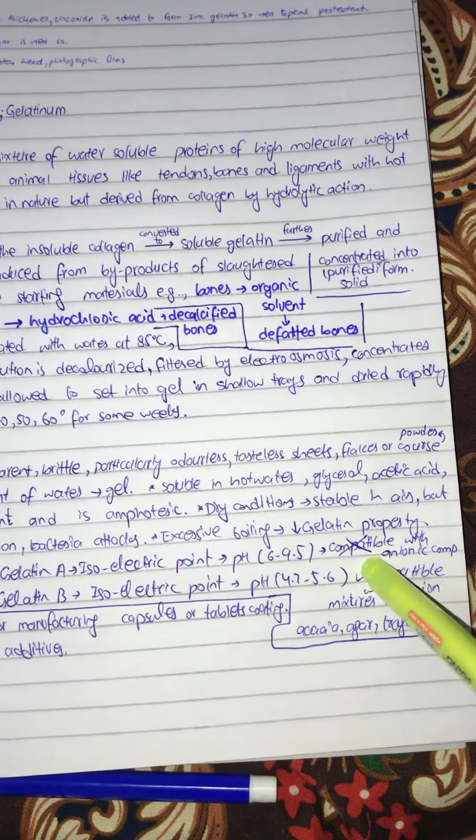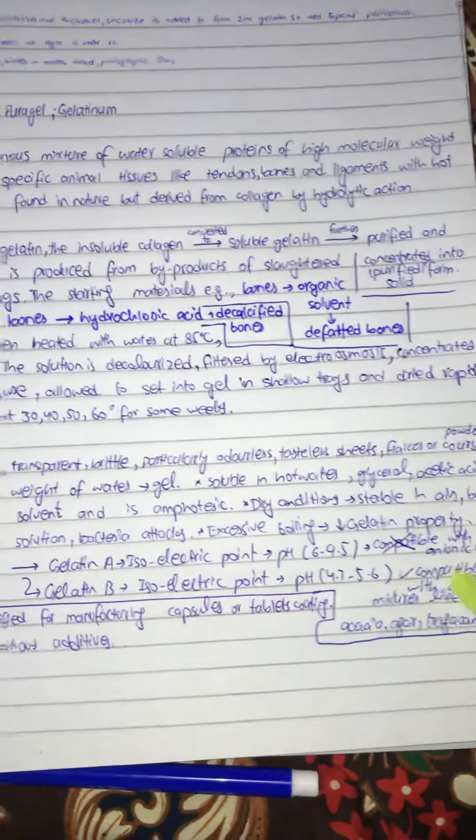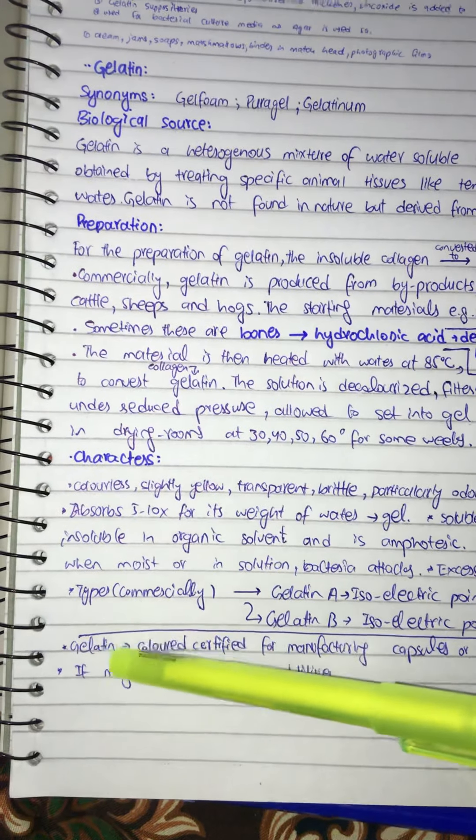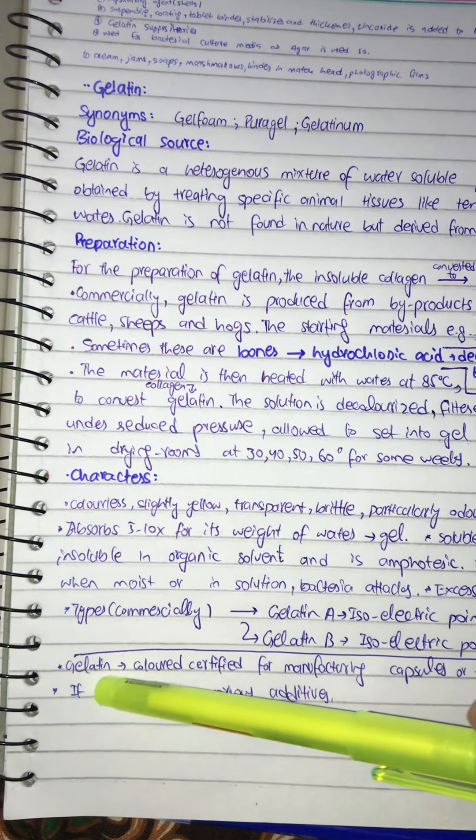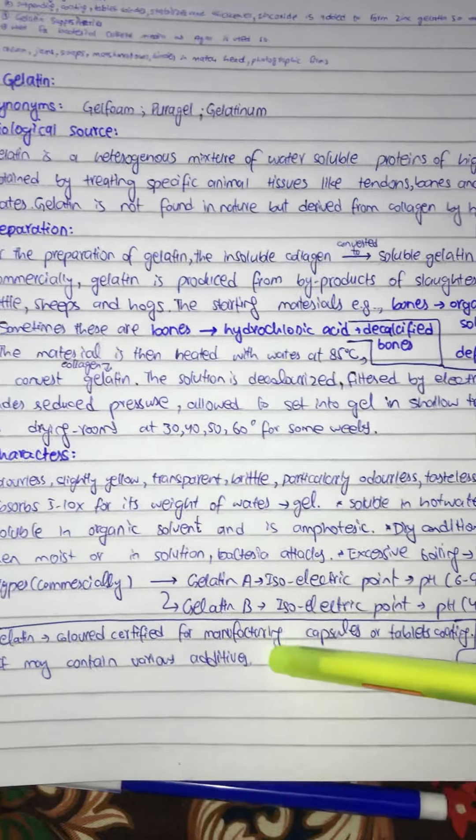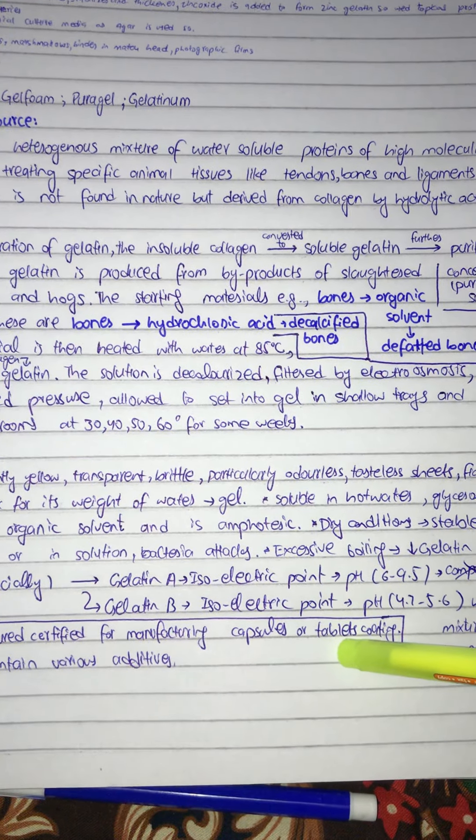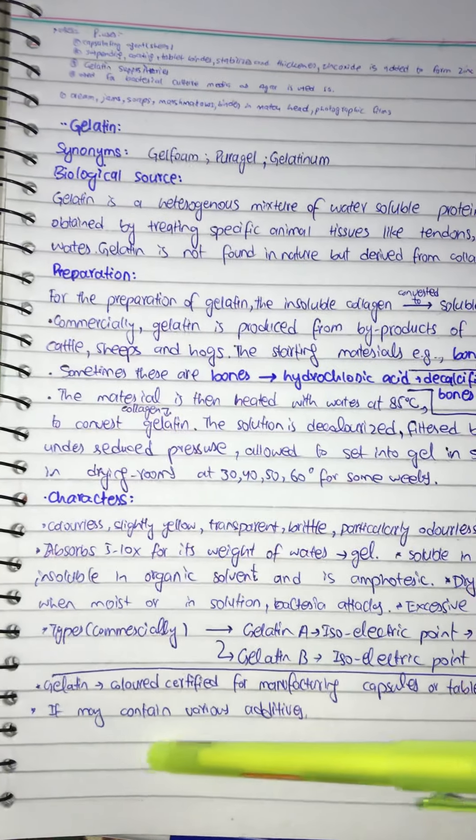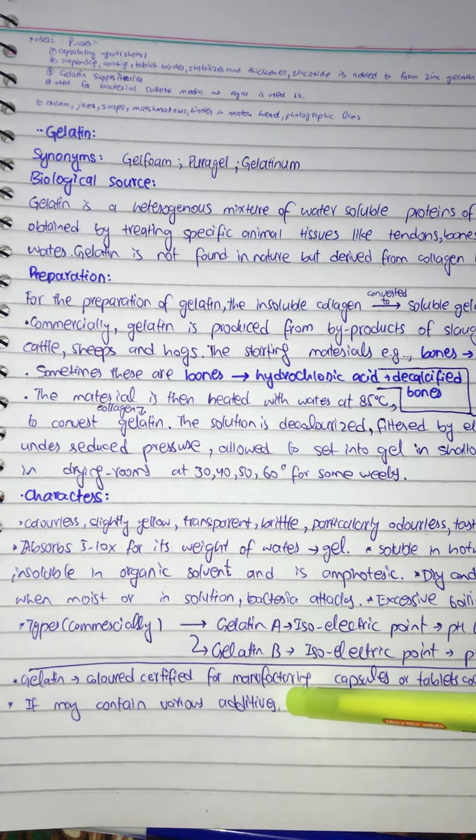In Type B gelatin, the isoelectric point lies between 4.7 to 4.6, and it is compatible with anionic mixtures like agar and tragacanth. Gelatin can be colored and certified for manufacturing capsules like vitamin capsules or tablet coatings. It may contain various additives for the further enhancement of their characteristics for pharmaceutical applications.